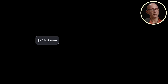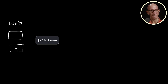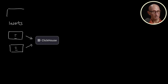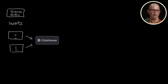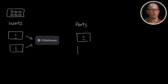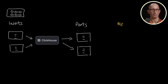So let's say we have ClickHouse running and we're doing some inserts into a table. ClickHouse uses a thread pool just for inserts, so we can happily ingest many rows in parallel. ClickHouse creates parts from each batch of rows. In the background, we have a merge process going on.